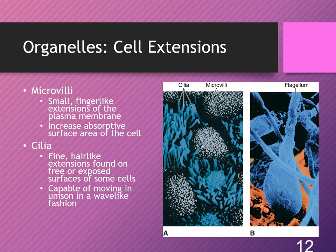There are three different types of cell extensions: microvilli, cilia, and flagella. Microvilli are small finger-like extensions that come off from the plasma membrane, and their job is to increase the absorptive surface area of the cell. A good example of this is in the small intestine, whose job is to absorb all the nutrients it can from the food we eat.